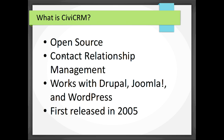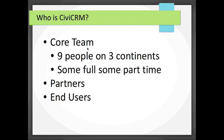There are nine people on three different continents on the core team, some full-time and some part-time. There are also companies like mine and some nonprofits that are partners — we help plan conferences, assist with infrastructure, and attend code sprints where we do bug fixes. End users are also really involved in the CiviCRM community; a lot of changes are made because people ask for them, either by funding them together or making a strong enough case.